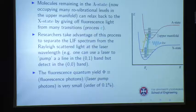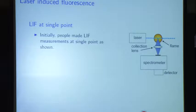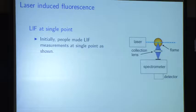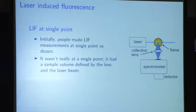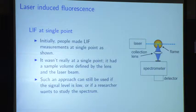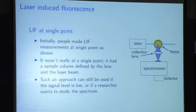Fluorescence quantum yield is usually pretty low, and when you do PLIF you typically need an intensified camera. People initially made LIF measurements at a single point, as shown here. It wasn't really a single point — there was a sample volume defined by the lens and the laser beam. You can still use that approach if you want to study a spectrum. In the 1980s and 90s, people used to do detailed studies of spectra to learn where to look for temperature measurements. They would scan the laser — called an excitation spectrum — and look at the fluorescence spectrum as a function of the pumped line.